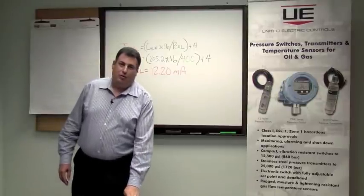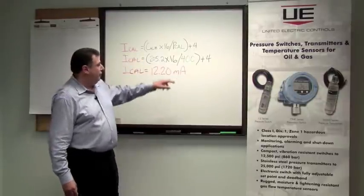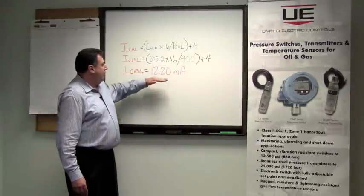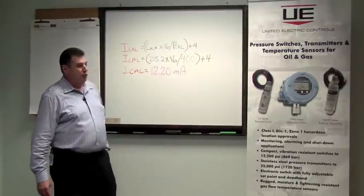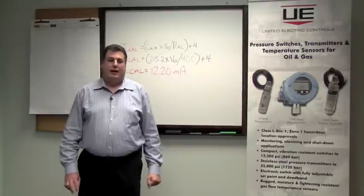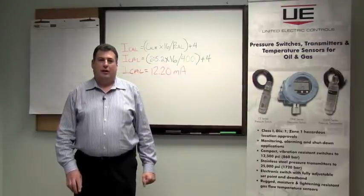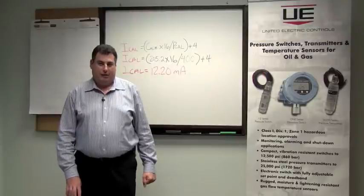So each TX200 has a 5 to 1 turn down. As I explained, we're turning it down to 400 psi, and the ICAL is 12.20 milliamps. The ICAL value is the milliamp current that we'll need to see when we're making our adjustments to the TX200.